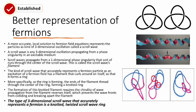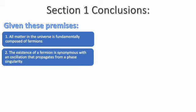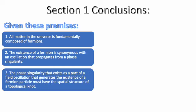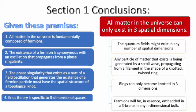We're now ready to answer the question posed at the beginning of this section: why does the universe have three spatial dimensions? Given these premises: one, all matter that exists in the universe is fundamentally composed of fermions; two, the existence of a fermion is synonymous with an oscillation propagating from a phase singularity; three, the phase singularity that generates a fermion must have the spatial structure of a topological knot; and four, knot theory is specific to three-dimensional spaces.